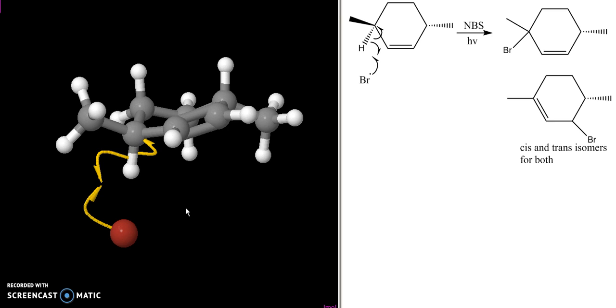One of the things I want to point out to you, and this is why it doesn't matter whether I start with the cis or the trans reactant, is that as this radical forms, this carbon becomes sp2-hybridized, which means that this methyl group moves down into the plane of this system, and it would do that whether I started with the cis or the trans reactant.